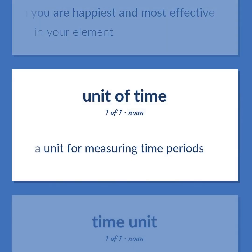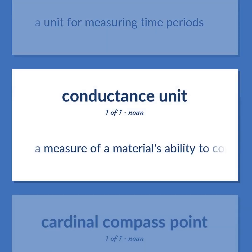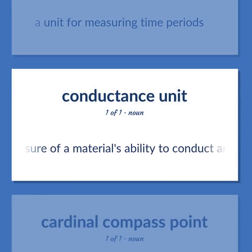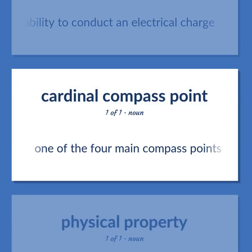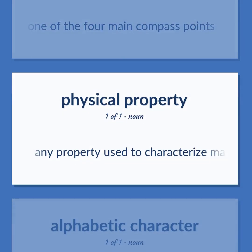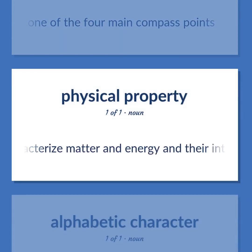A unit for measuring time periods. A measure of a material's ability to conduct an electrical charge. One of the four main compass points. Any property used to characterize matter and energy and their interactions.